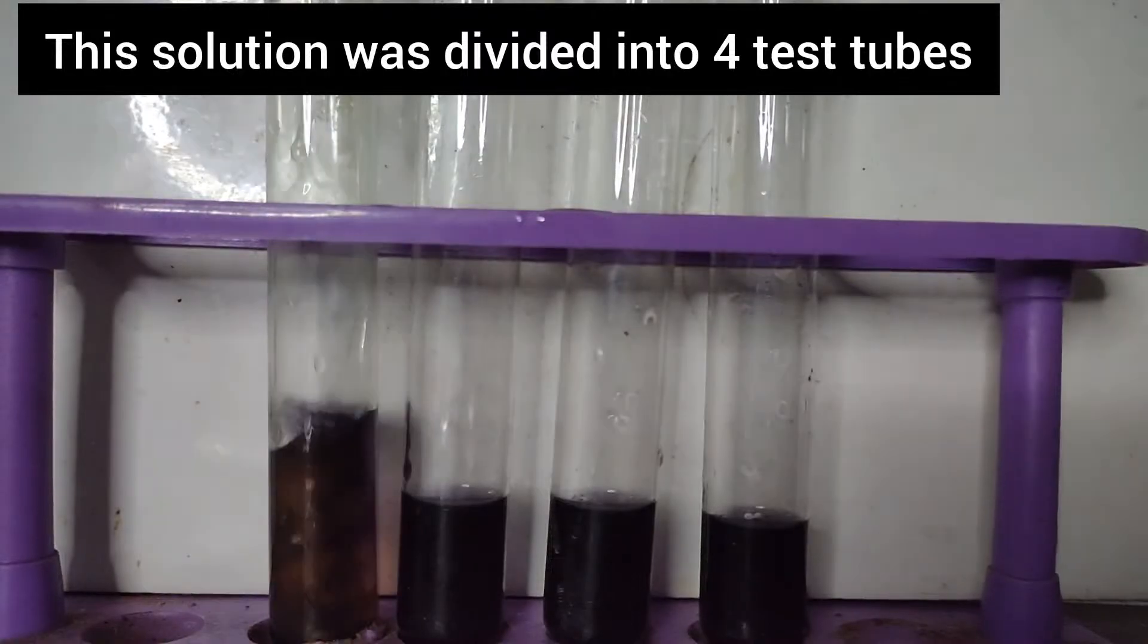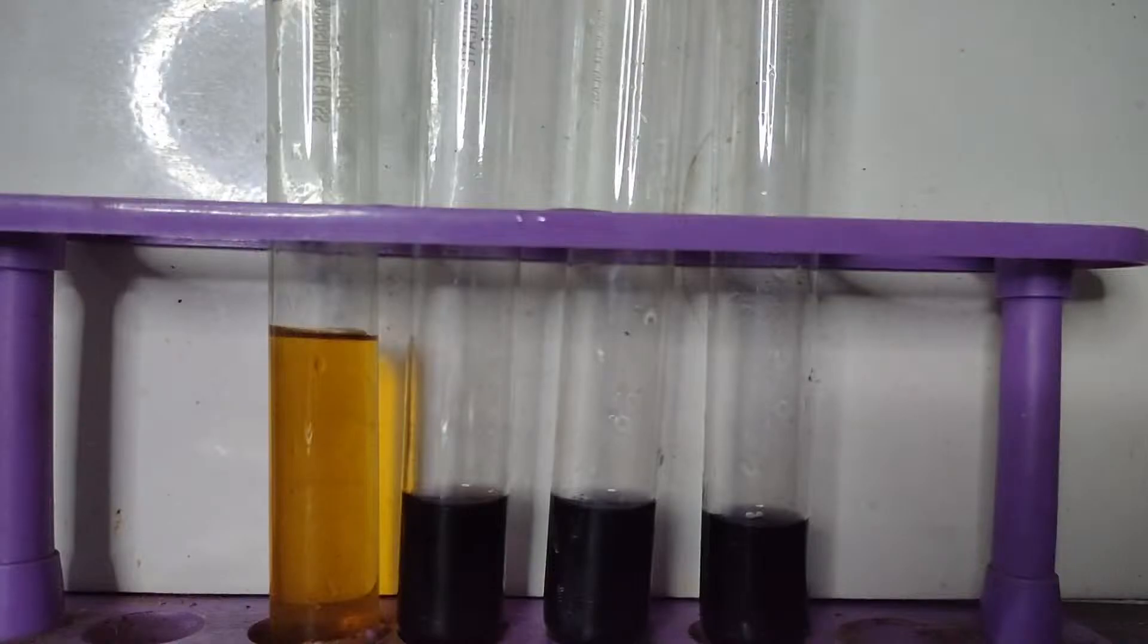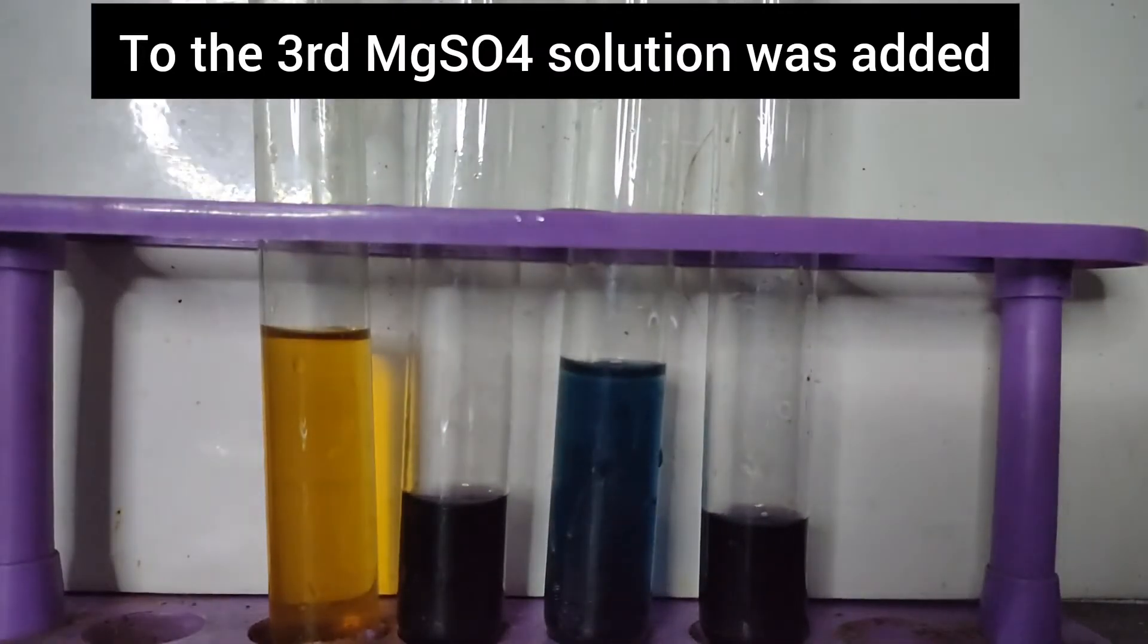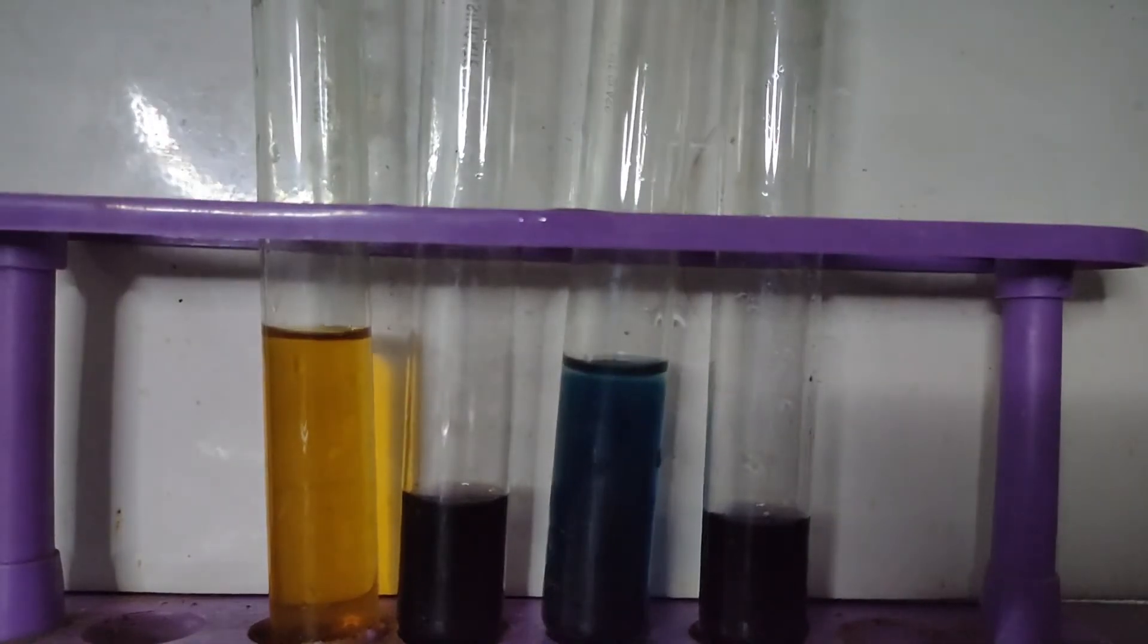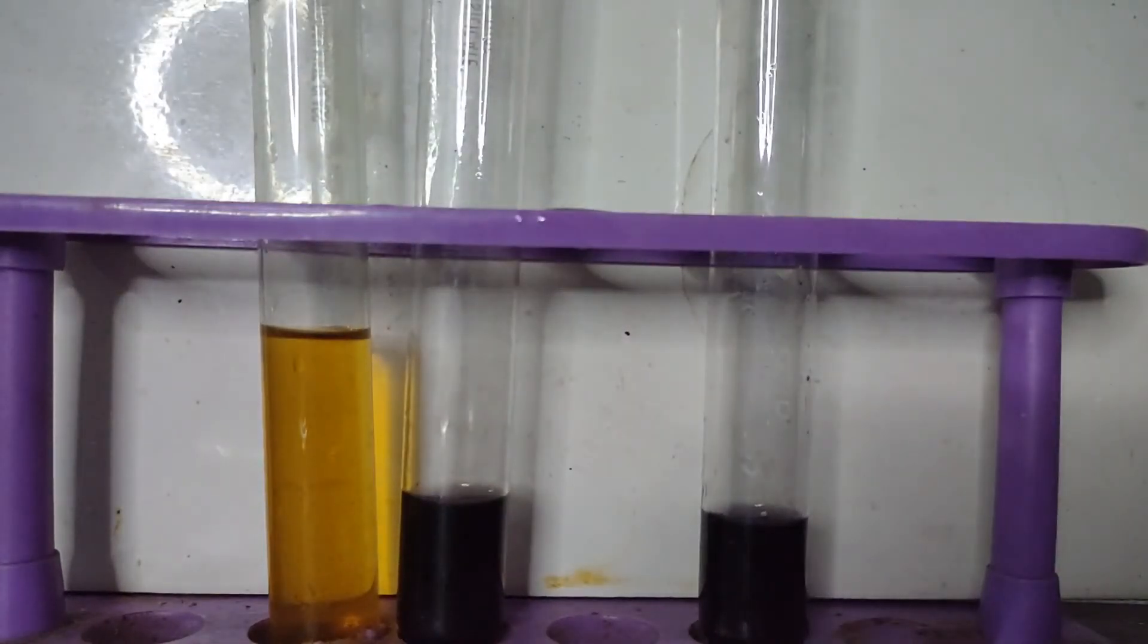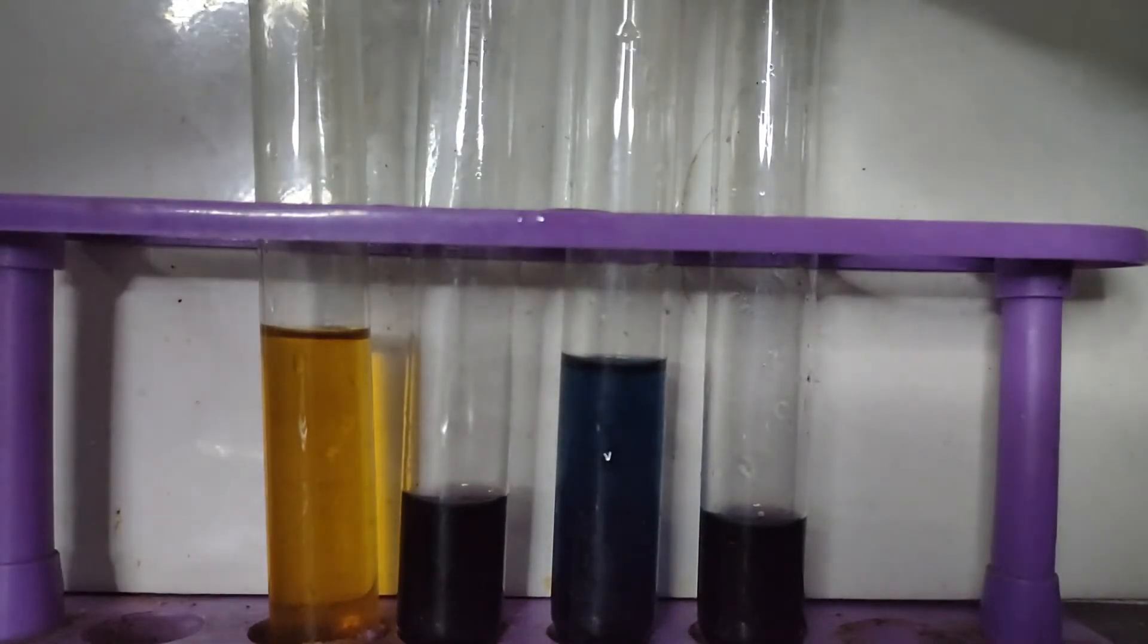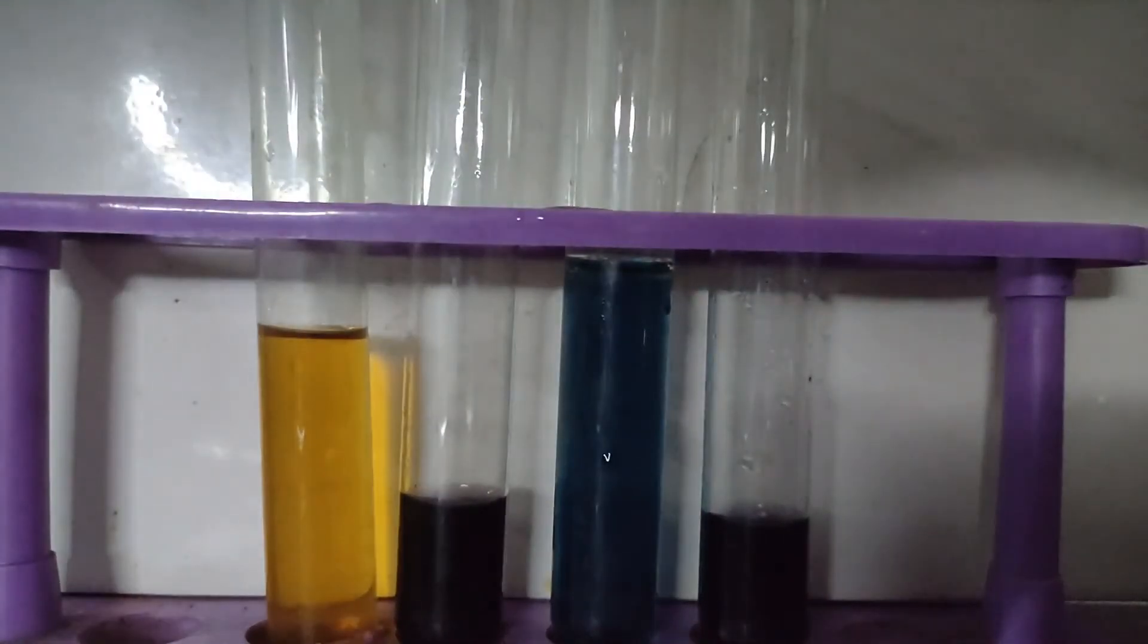This solution was divided into 4 test tubes. In the first test tube, dilute hydrochloric acid was added and the color changed to yellow. In the third test tube, magnesium sulfate solution was added and a blue lake is formed. Therefore, this dye is also used for testing magnesium ions as it gives a blue lake in alkaline solution with magnesium ions.